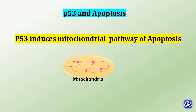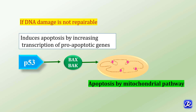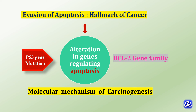P53 plays a key role in apoptosis by inducing the mitochondrial pathway. If DNA damage is not repairable, P53 induces apoptosis by increasing transcription of pro-apoptotic genes like BAX and BAK, triggering the intrinsic pathway. Mutation in the P53 gene and BCL2 gene family leads to inability to induce apoptosis in cells with damaged DNA, allowing cell cycle progression with damaged DNA, neoplastic transformation, and carcinogenesis. Evasion of apoptosis is the hallmark of cancer.